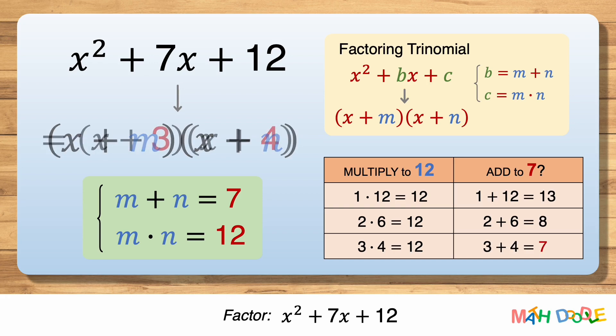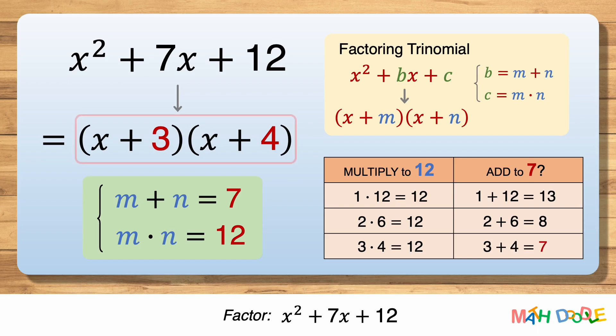This means m and n are 3 and 4. So the answer is (x + 3)(x + 4).